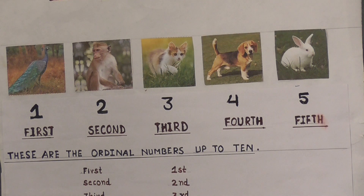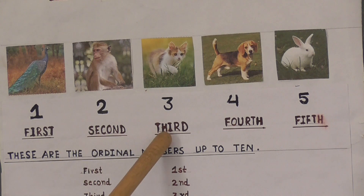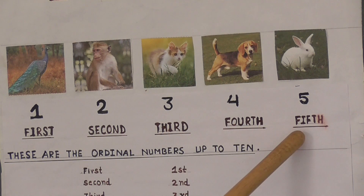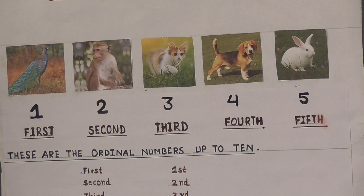So children, the numbers 1, 2, 3, 4, 5, etc. used to show position are called Ordinal Numbers.